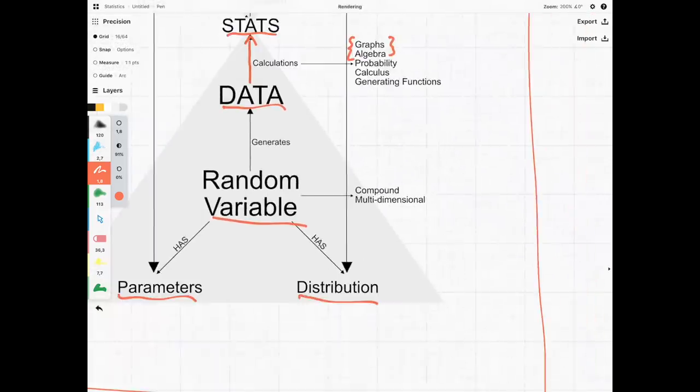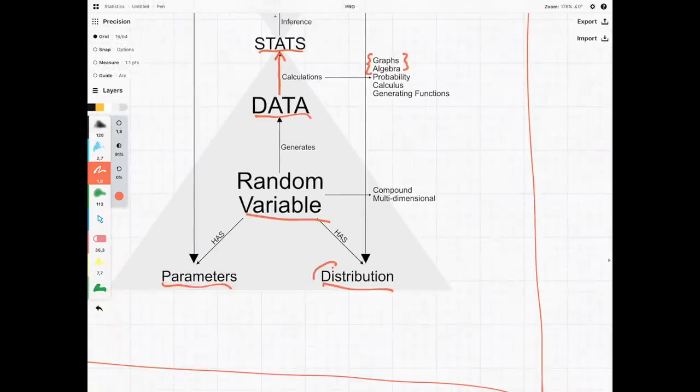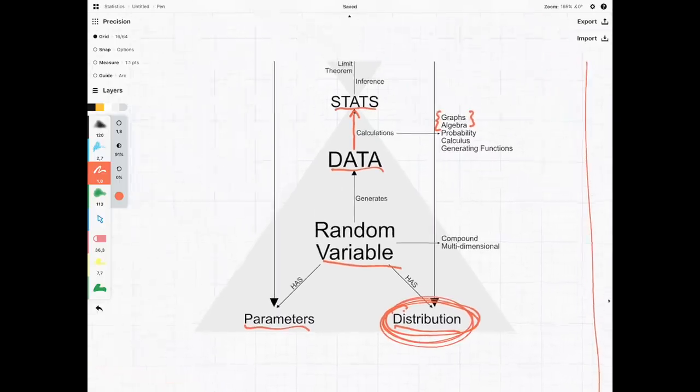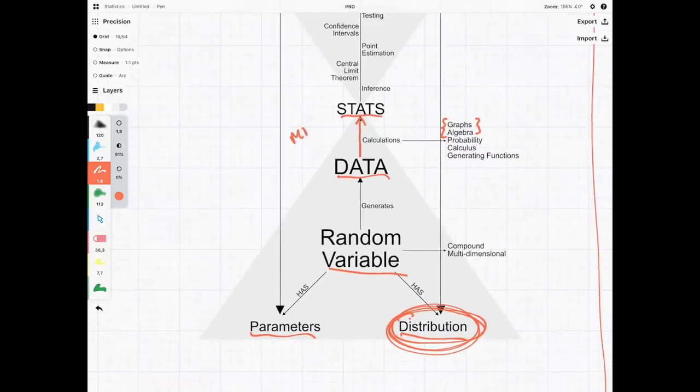The graphs are a great way for us to try and figure out what the distribution is going to be. And the algebra is going to help us to calculate something known as the mean, which is a statistic that is very good at estimating the parameters. And this is where the algebra comes in. So we're using graphs for the distributions and algebra for the parameters.